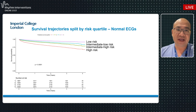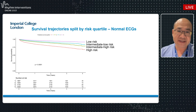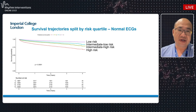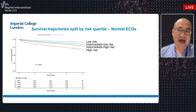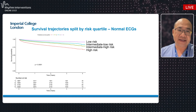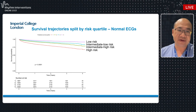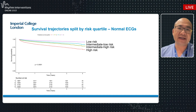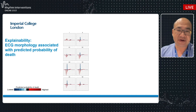Importantly, even in ECGs deemed as normal by physicians in the US cohort, the model is still able to pick up high-risk individuals who appear to have a 25% mortality rate over the next four years. It seems to have superhuman abilities that beat years and years of clinical experience.